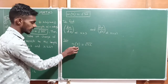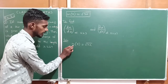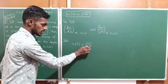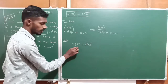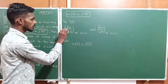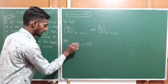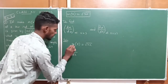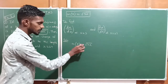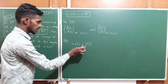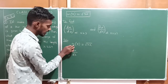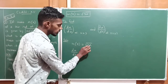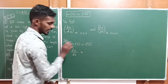m(x) means m in terms of x, where x is the variable. So differentiating m with respect to x gives dm/dx. The left side is dm/dx and the right side is the differentiation of √(3x).